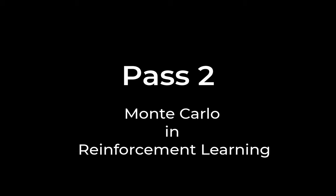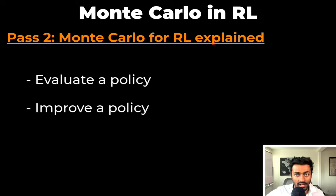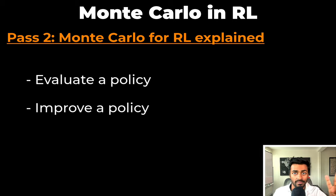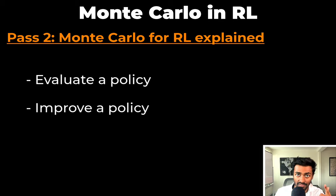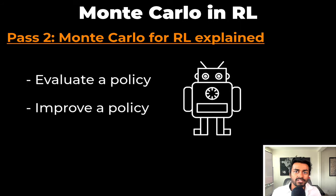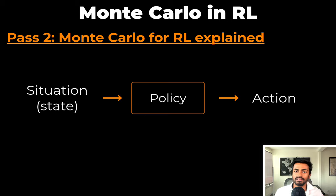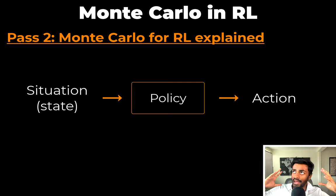That's going to do it for quiz time for now, but I'll be back so pay attention. Now on to part 2, where we talk about Monte Carlo methods specifically for reinforcement learning. Monte Carlo methods are used in reinforcement learning for two purposes: one is to evaluate a policy and the other is to improve a given policy. A policy can be thought of as the decision-making brain of any agent — based on a situation, that policy will dictate what action the agent should take.